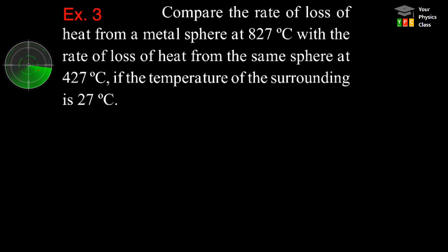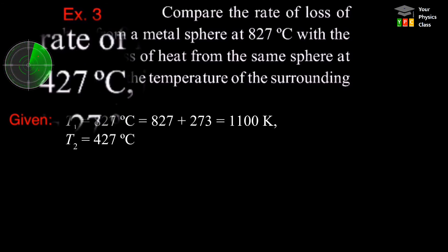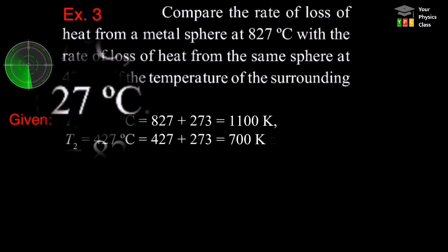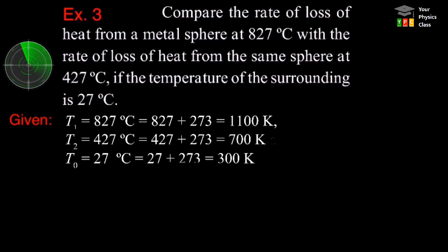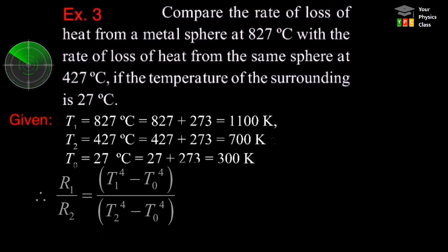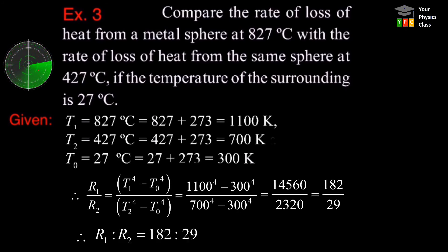Example 3: Compare the rate of loss of heat from a metal sphere at 827°C with the rate of loss of heat from the same sphere at 427°C, if the temperature of the surroundings is 27°C. Given: T1 = 827°C = 1100 K, T2 = 427°C = 700 K, T-surroundings = 27°C = 300 K. Using the Stefan-Boltzmann law to write R1 and R2 and comparing, then substituting values, we get the answer as 182 to 29.